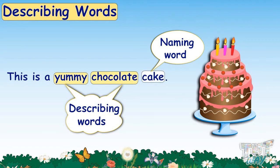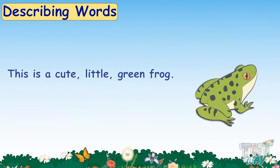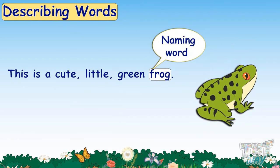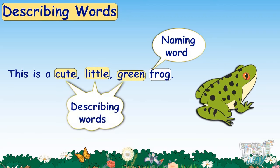We have many examples to make you understand properly. Here comes another one. The naming word here is frog, as it is the name of an animal. And the describing words for frog are cute, little, and green. So, cute, little, and green are the describing words for a frog.